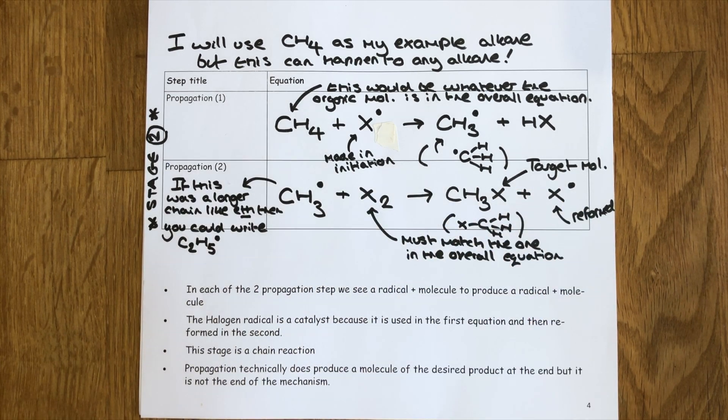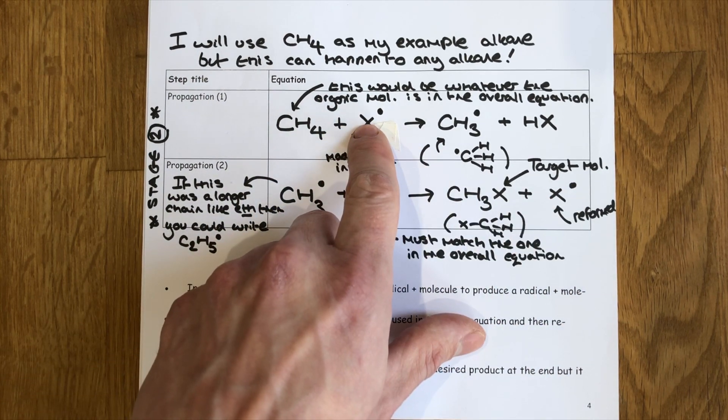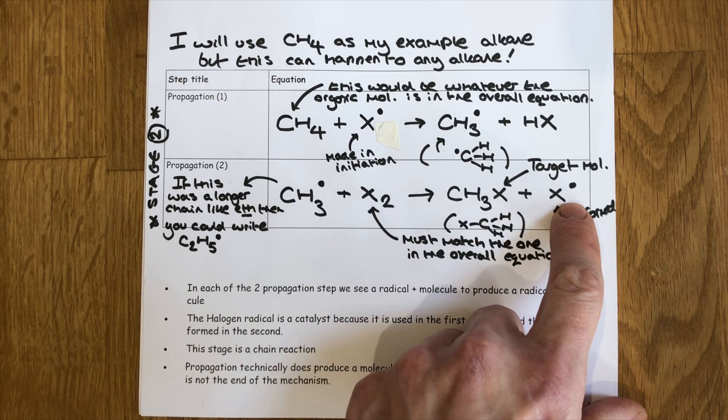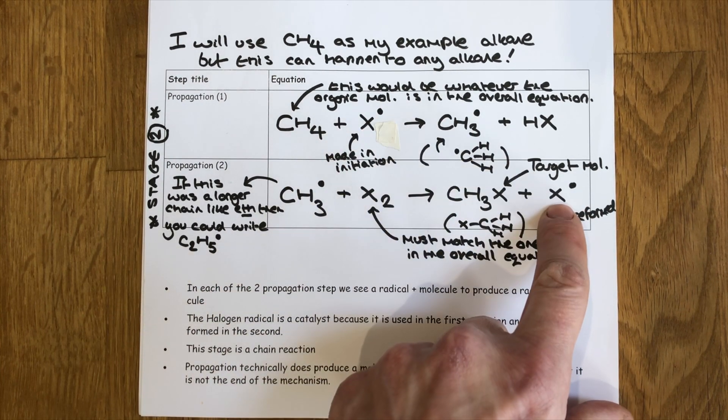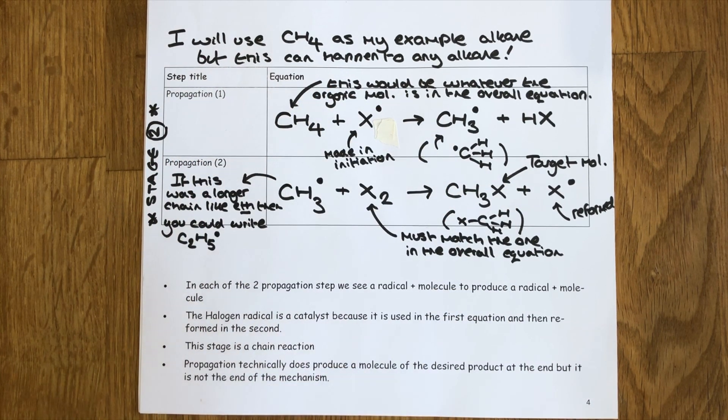The general template for this equation is alkyl radical with halogen to give haloalkane target product and halogen radical. As you can see here, the halogen radical goes in and comes back out chemically unchanged, and so the halogen radical is catalyzing this process and it's demonstrated here by these two equations of propagation.